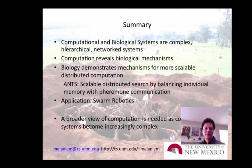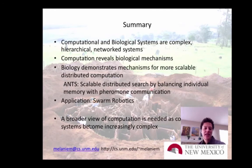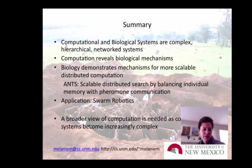Both computational and biological systems are complex systems where interacting agents are connected by networks of communication. We can use computer science and models to reveal how biological complex systems work. And we can go to biology and ask how distributed strategies work. In particular, ants taught us that you can have a scalable distributed search mechanism by balancing individual memory with pheromone communication. We were able to take that and put it into swarm robotics — mobile computers moving around and interacting to imitate the way ants communicate to achieve a task.